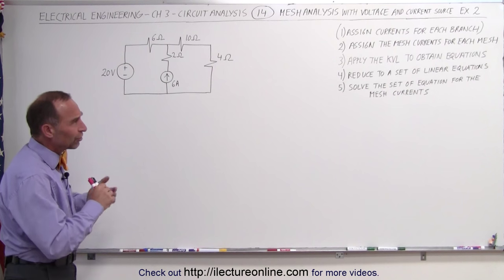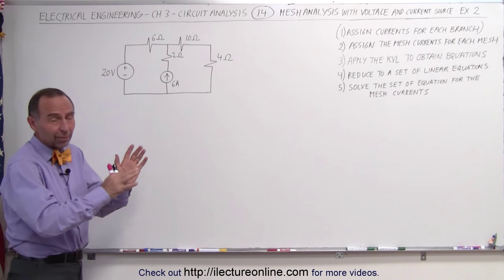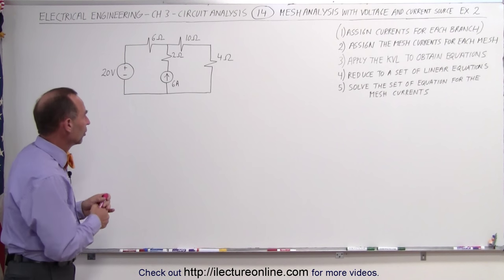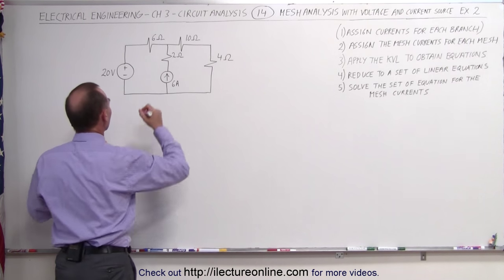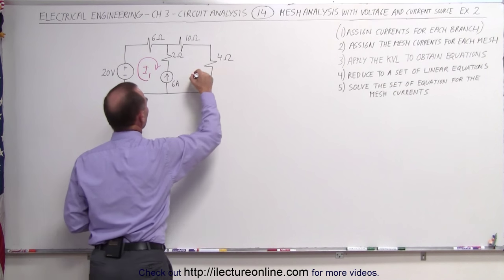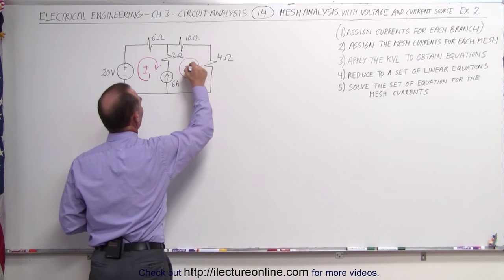What we want to do is assign currents for each branch, but we can skip that step until the end. Let's just start with assigning mesh currents for each mesh. We have two meshes. Our first mesh has a current in this direction, I1. Our second mesh, a current in this direction, I2.